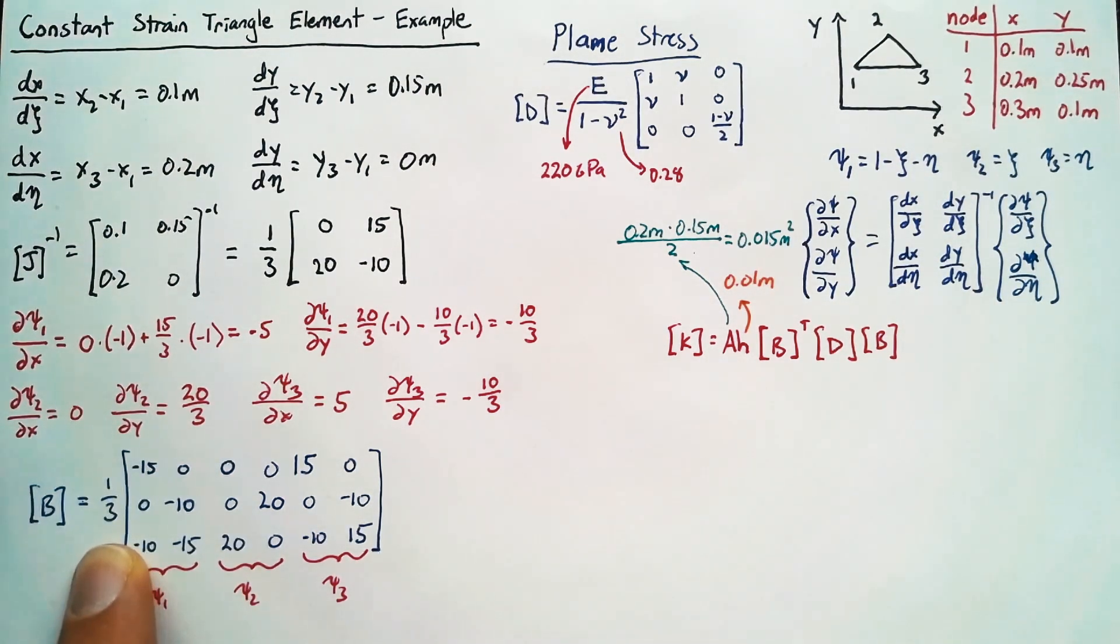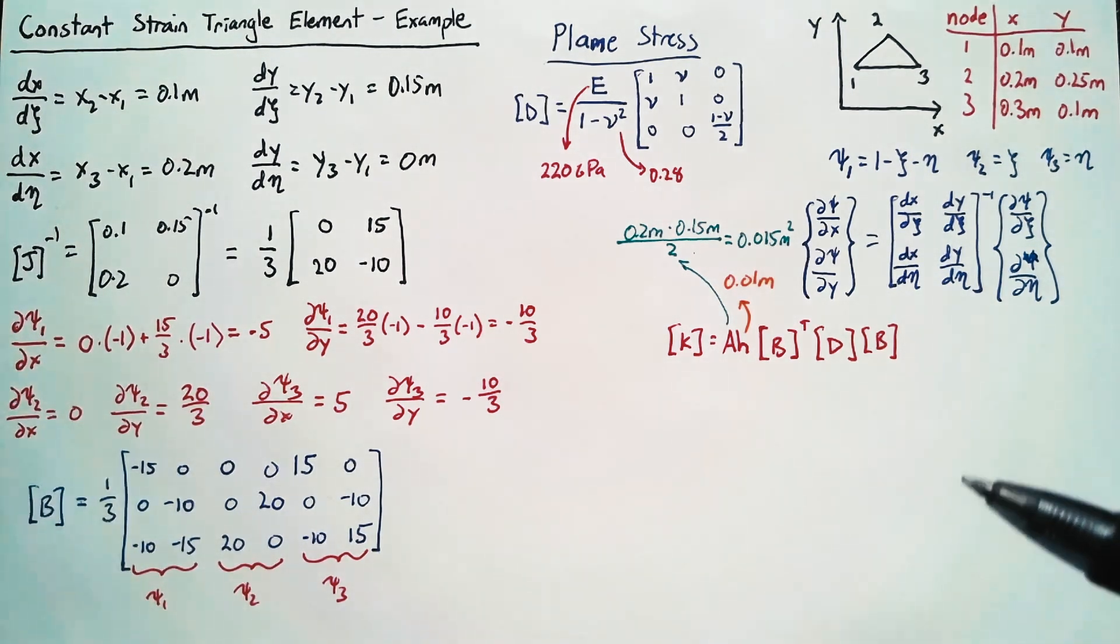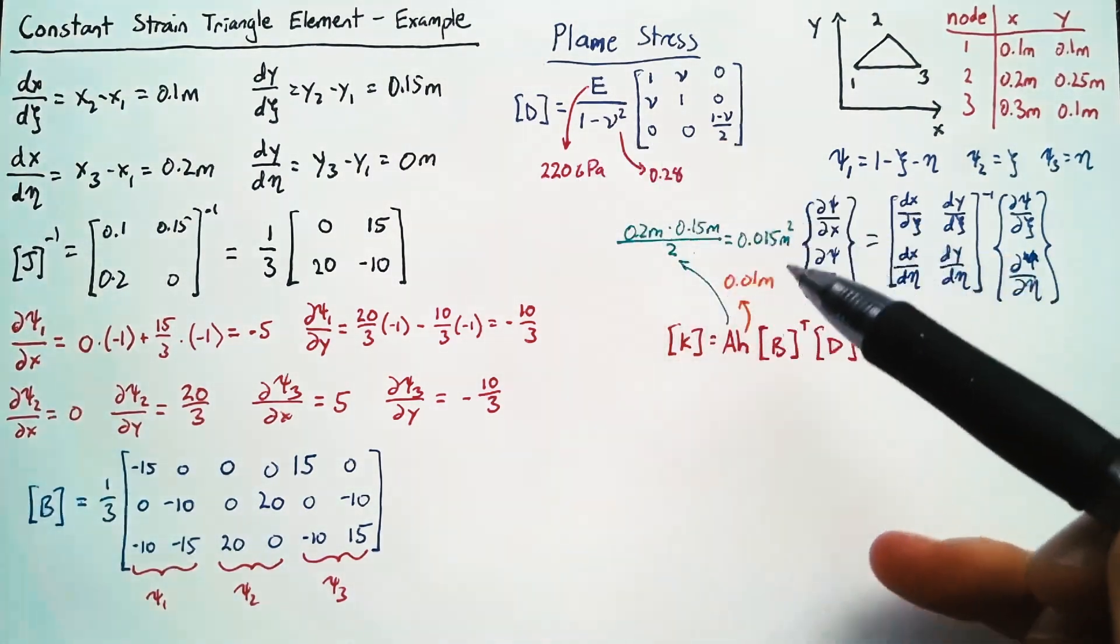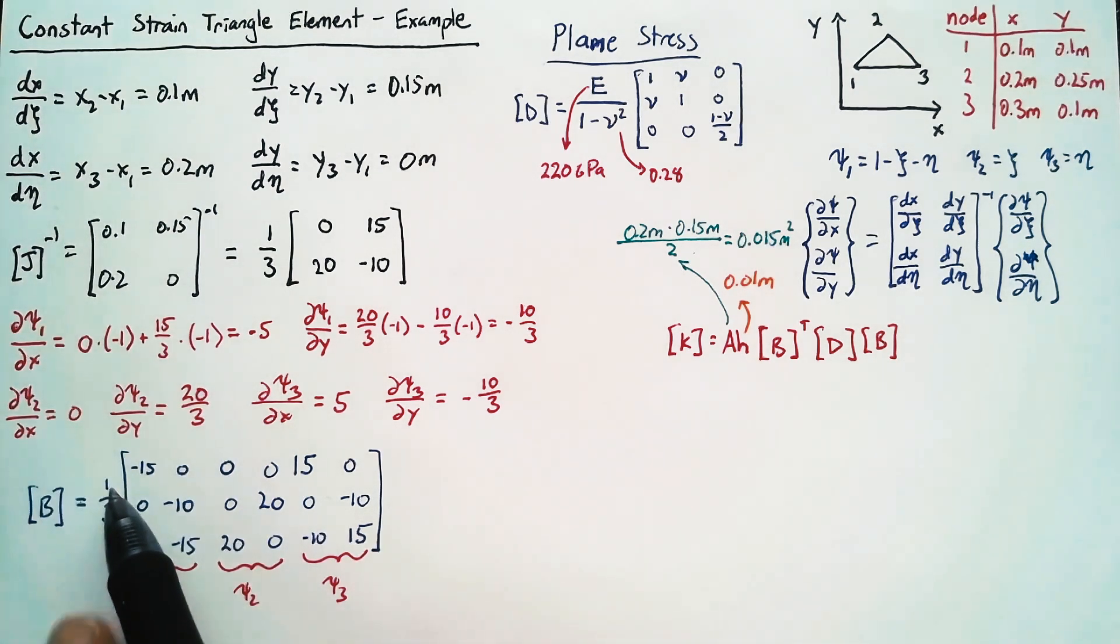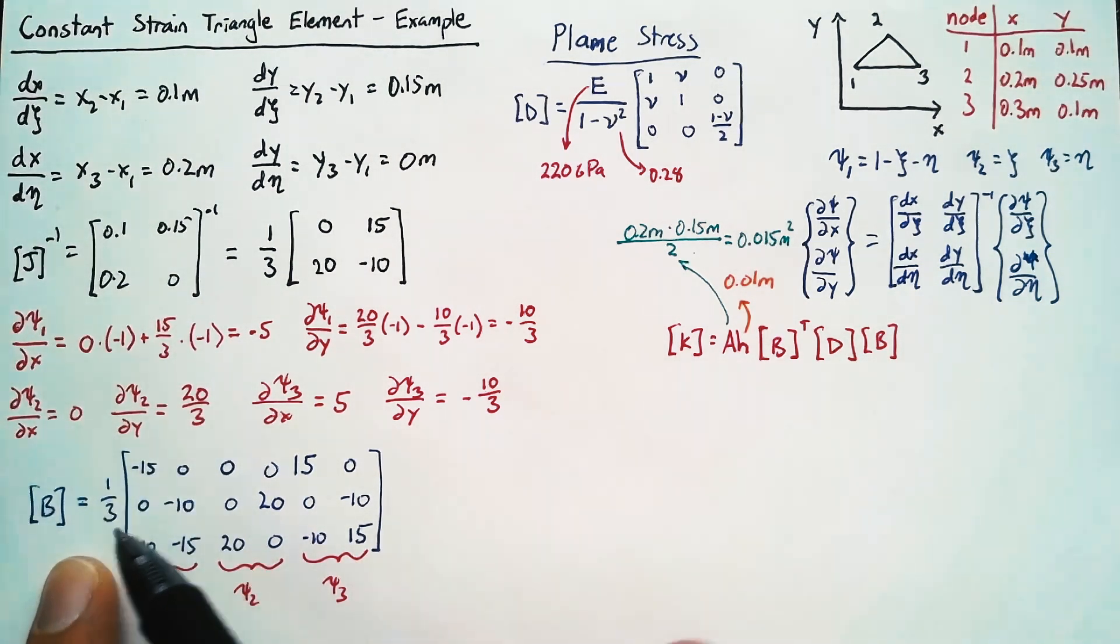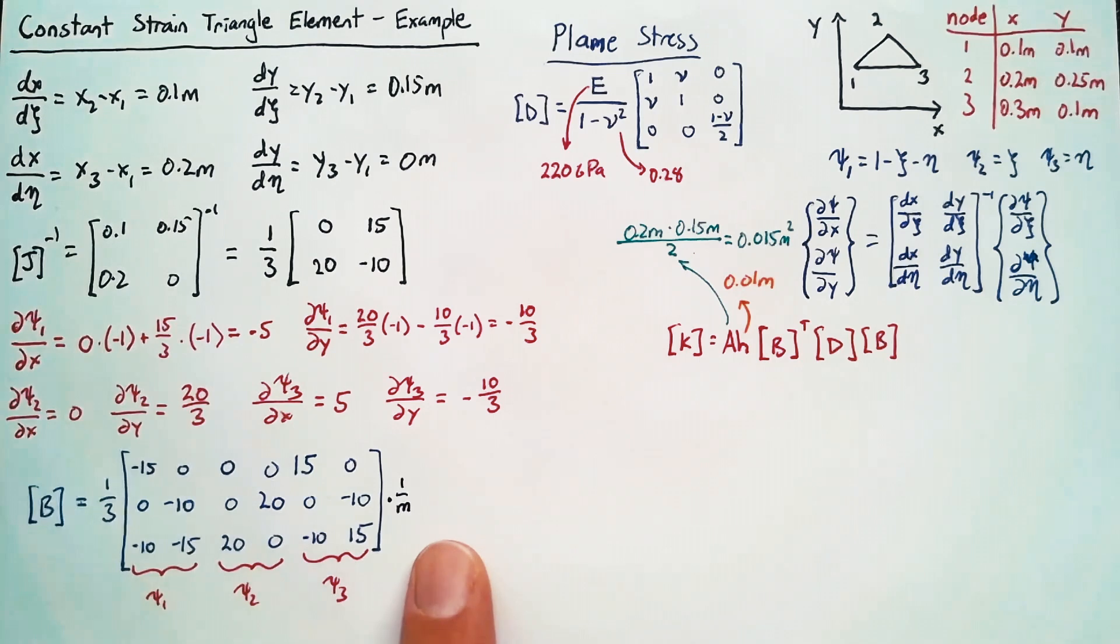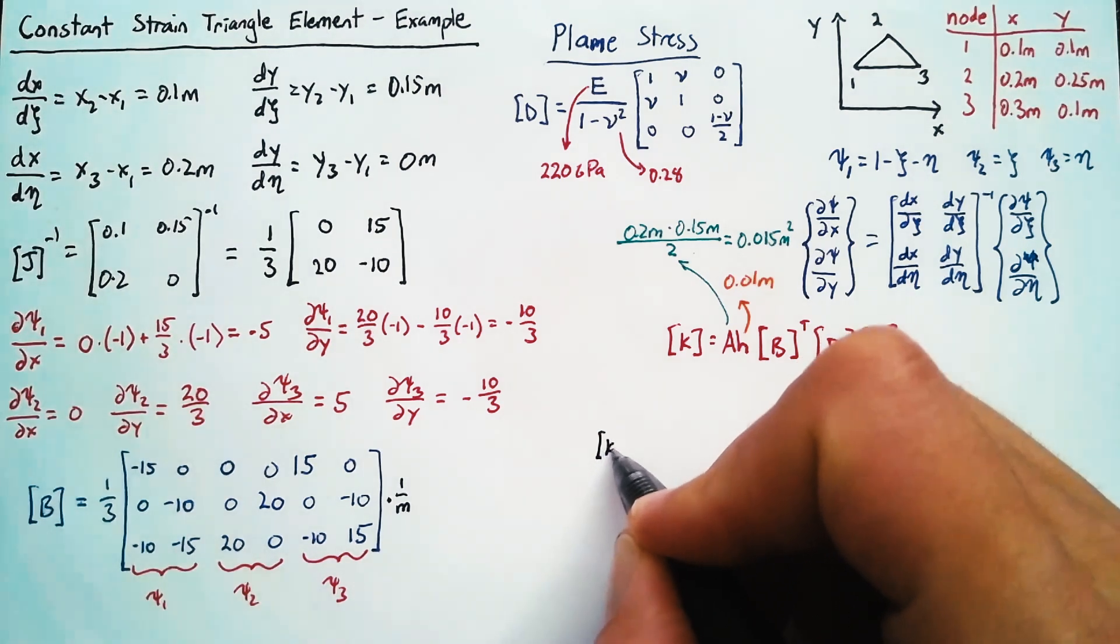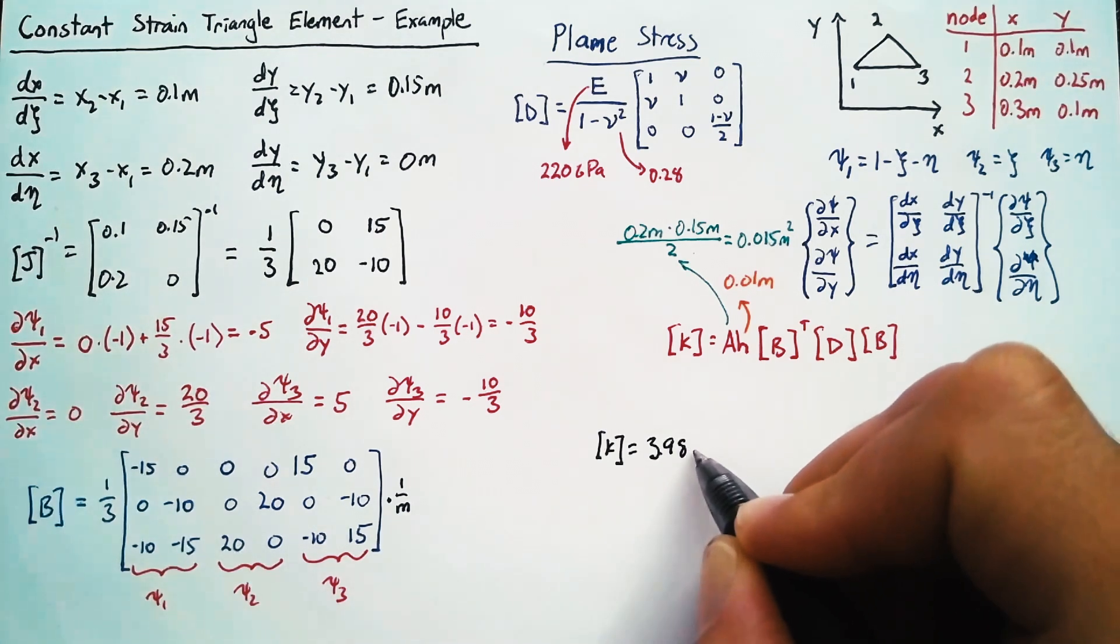Now we're also going to have a 1 9th out front from these B matrices. So in addition to the units that we've listed here, the GPa, and then these 3 meters here, there is a 1 per meter in each of the B matrices. Remember, each of these is a derivative. So we really should be multiplying this by 1 per meter to keep our units up. And so all told, our K matrix out front is going to have 3.98 mega newtons per meter.